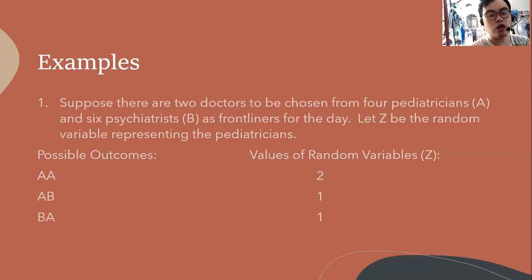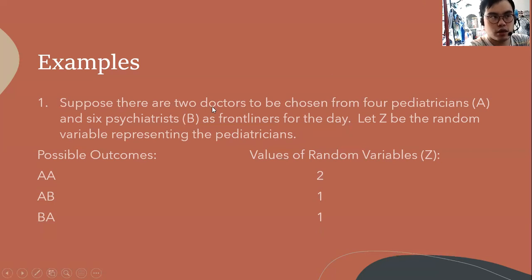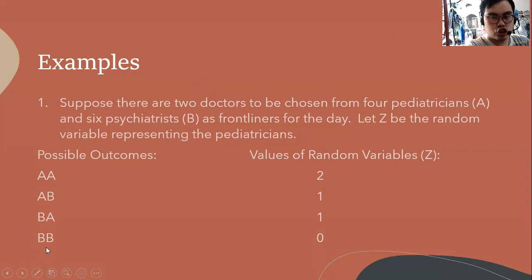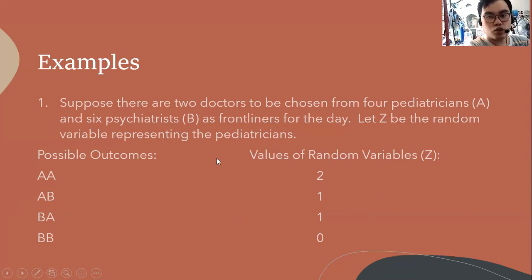The outcome BA also contains one psychiatrist and one pediatrician, so the value of the random variable is one. For the last outcome BB, the value of the random variable is zero because none of the pediatricians are chosen — both doctors selected are psychiatrists. So the possible values of this random variable are two, one, and zero.